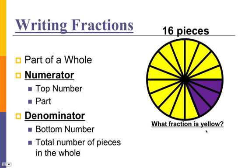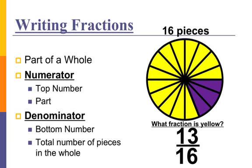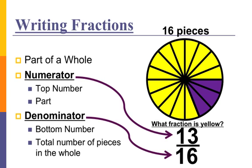How about what fraction is yellow? We've got 16 total pieces, of which one, two, three, four, five, six, seven, eight, nine, ten, eleven, twelve, thirteen pieces are yellow. So what fraction will I use to represent the yellow of the circle? That would be 13 over 16. Thirteen is my numerator because it tells me the part or how much of it is yellow, and 16 is my denominator because it tells me how many total pieces are in the whole.